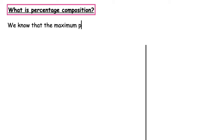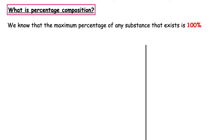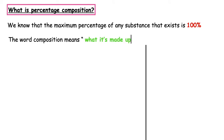What is percentage composition? We know that the maximum percentage of any substance that exists is 100%. The word composition means what it's made up of. Let's take a very simple example.